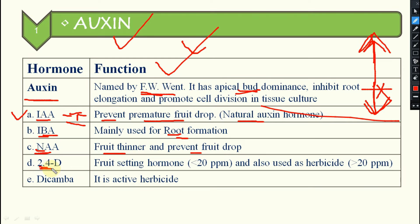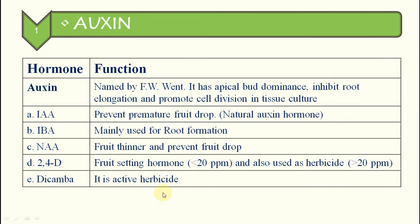The next is 2,4-D, which is an effective herbicide. There are two effects depending on concentration: if used at less than 20 ppm, it acts as a fruit setting hormone; if used at more than 20 ppm, it acts as a herbicide. The next is Dicamba, which is also an active herbicide. This is all about the auxin hormone.